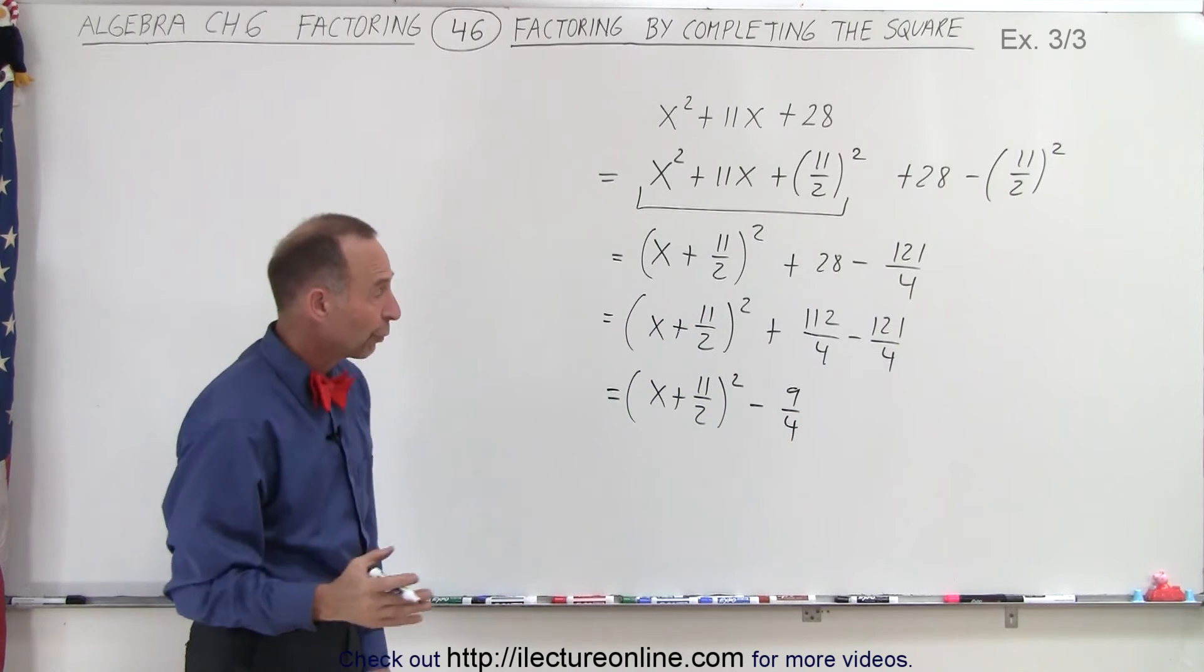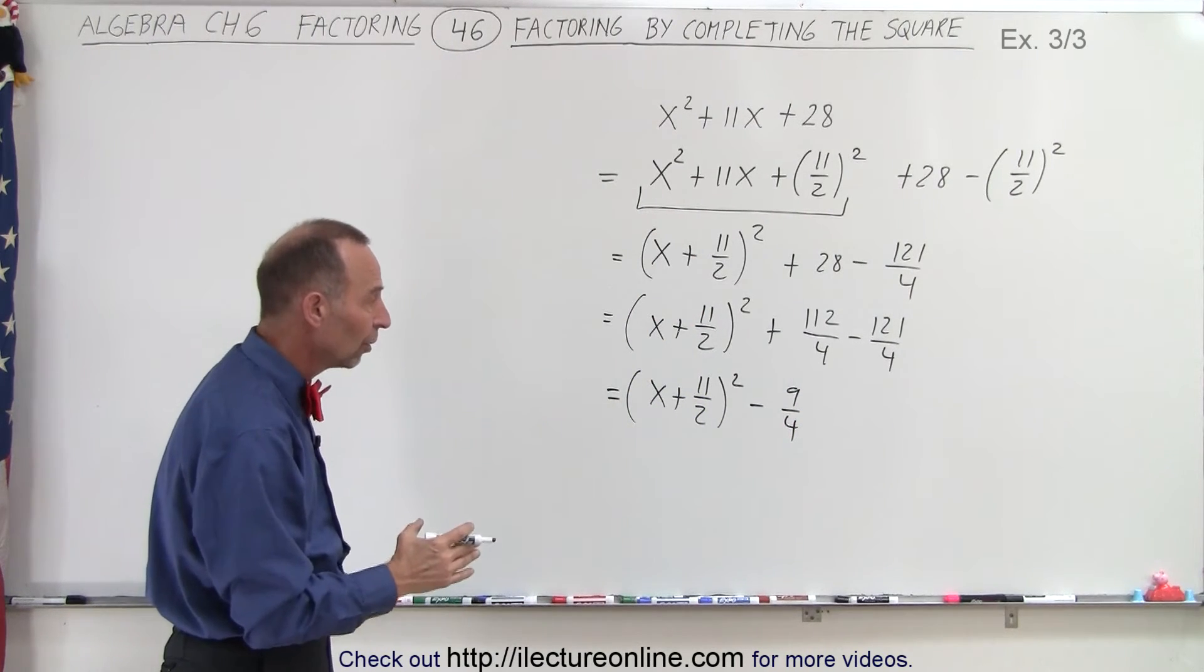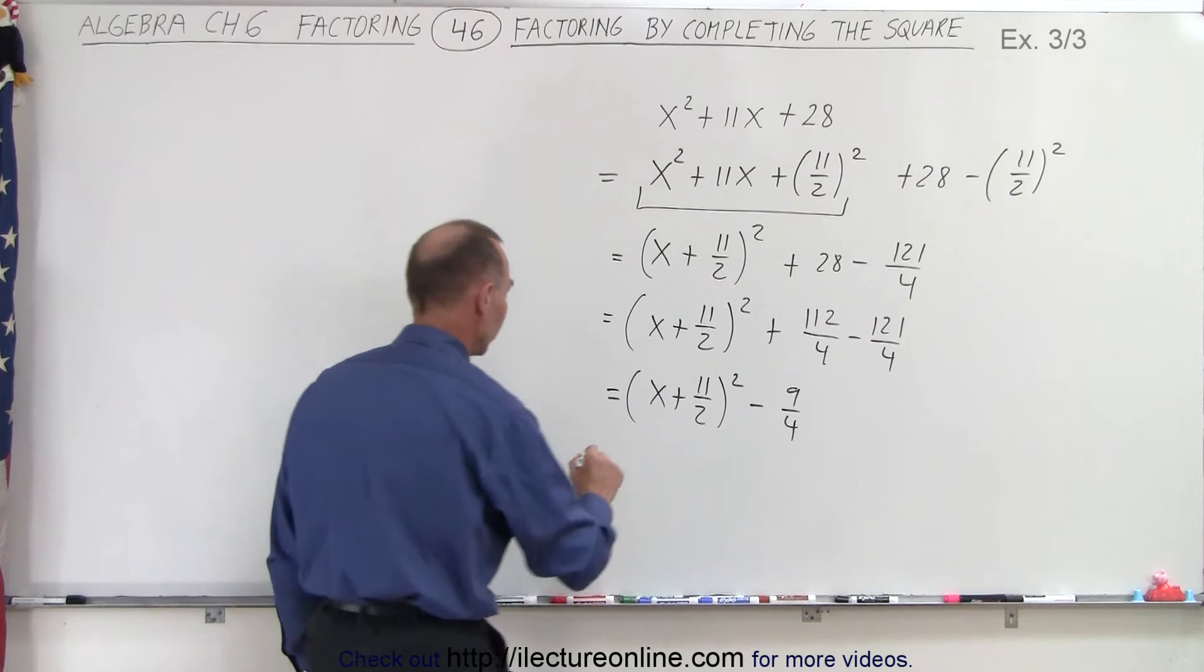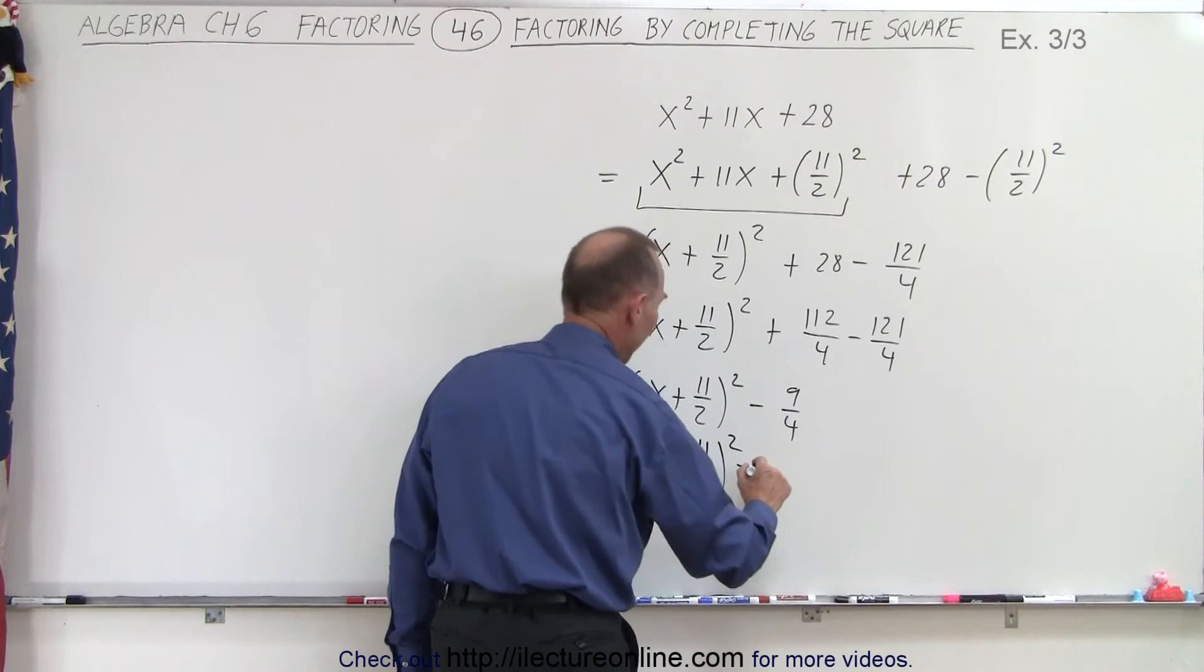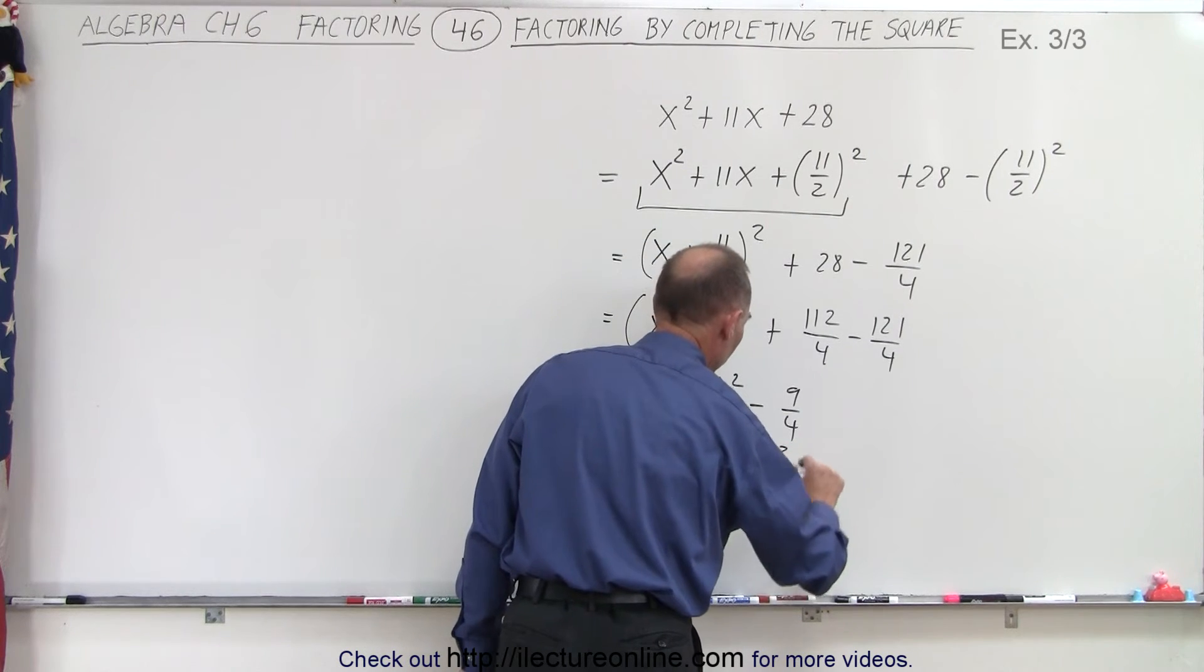And of course, 9 over 4 can be written as 3 over 2 quantity squared. So this is equal to x plus 11 over 2 squared minus the quantity 3 over 2 squared.